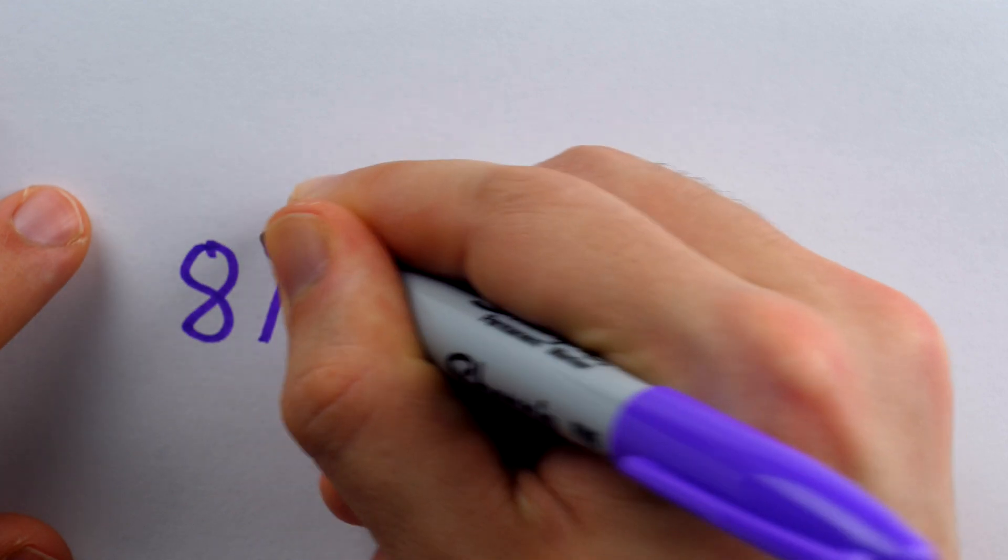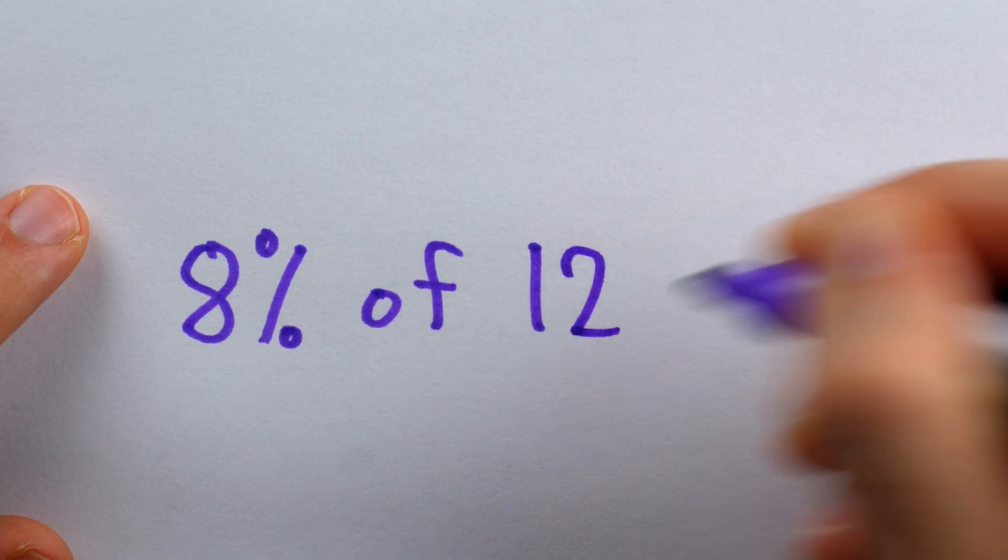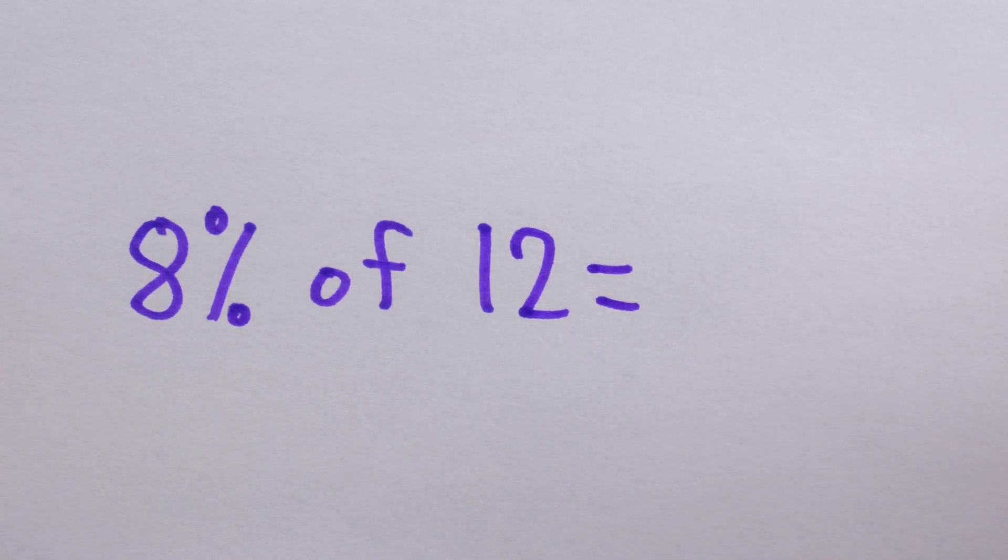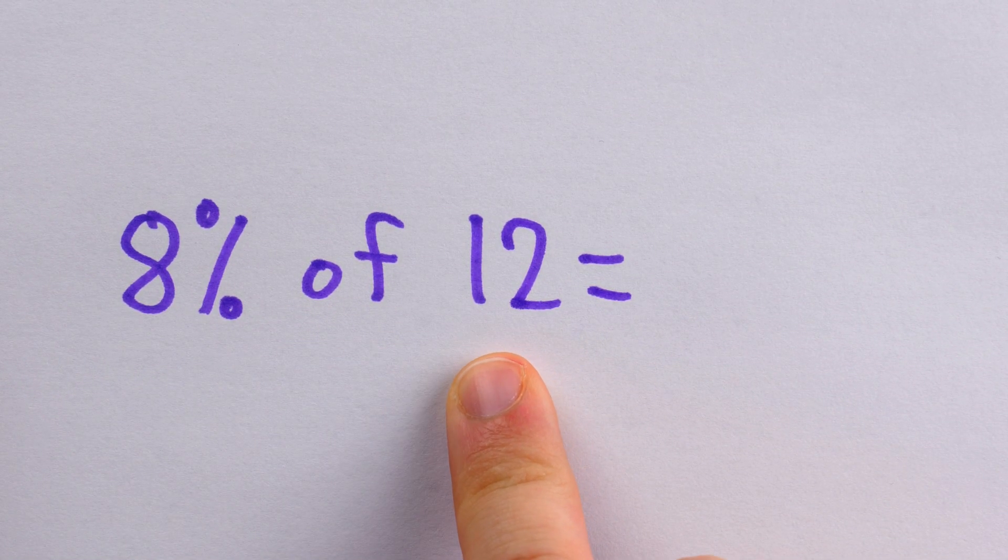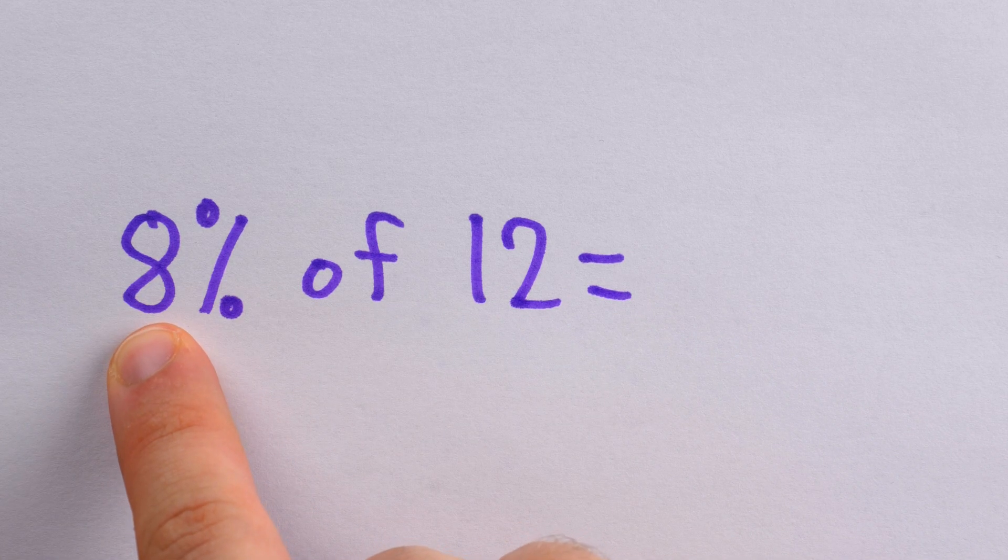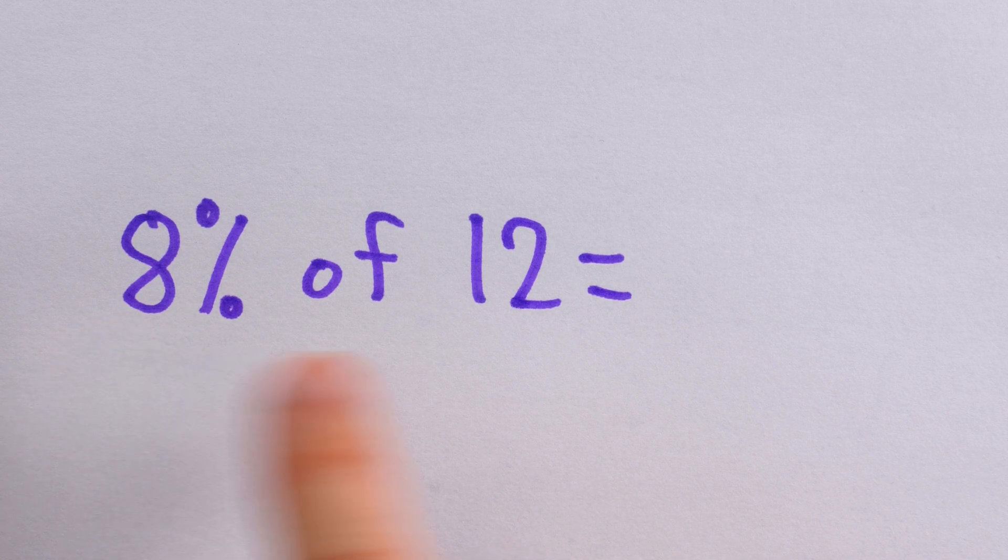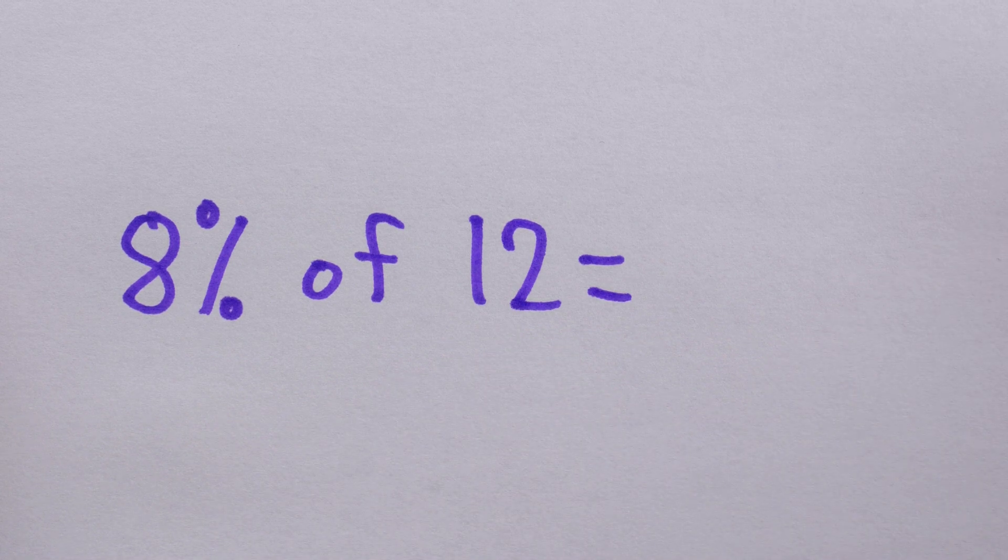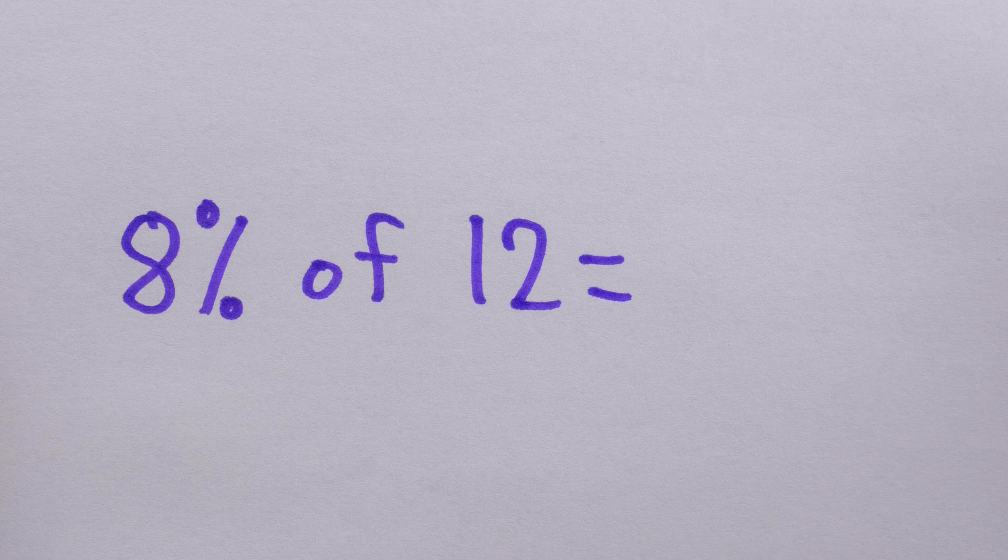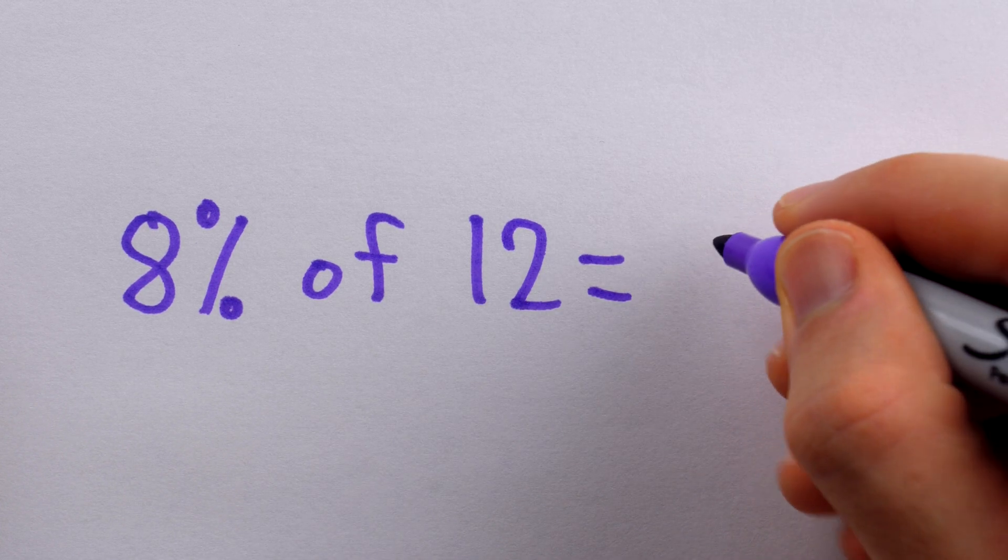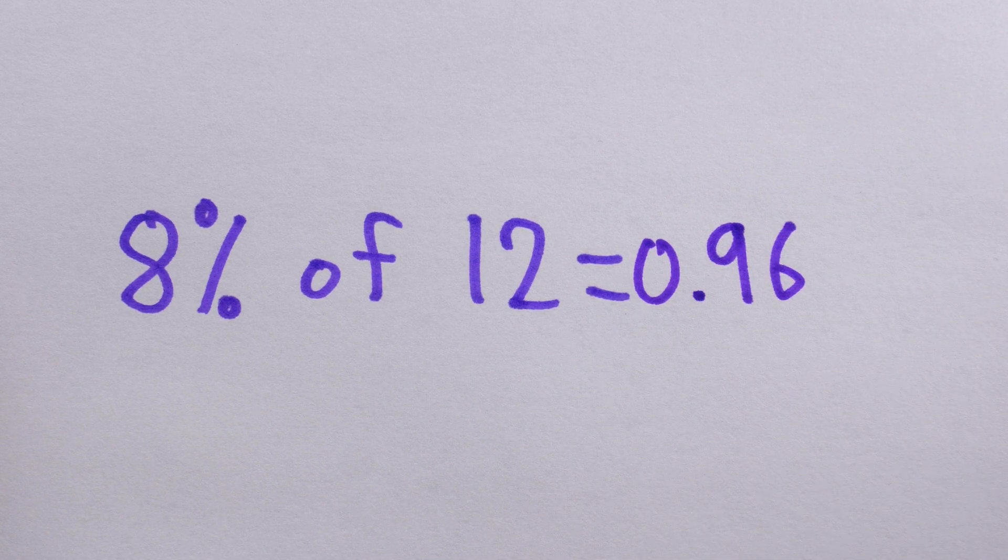But for those less obvious percentages, like 8% of 12, you gotta realize that all you have to do is multiplication, and then divide by 100. What's 8% of 12? Maybe I don't know offhand. What's 12% of 8? Not totally sure, but I can do multiplication. What's 8 times 12? Well, it's 8 times 10, 80, plus 8 times 2, so 80 plus 16, so 96. And then I just need to divide that by 100, so it is in fact 0.96.